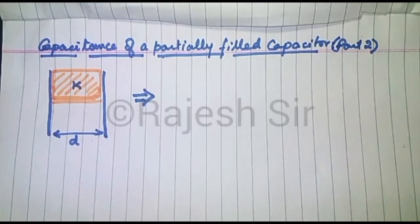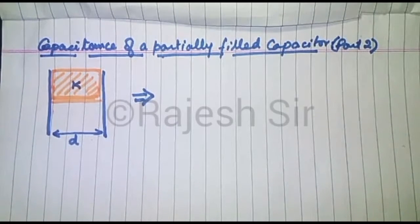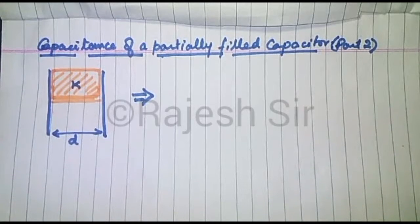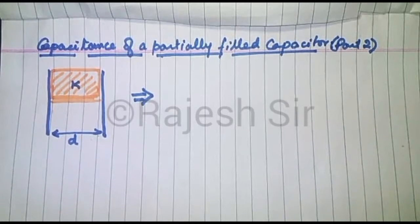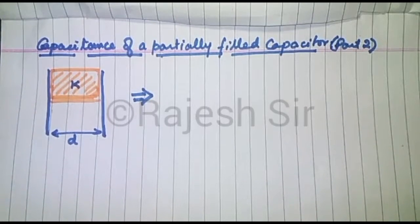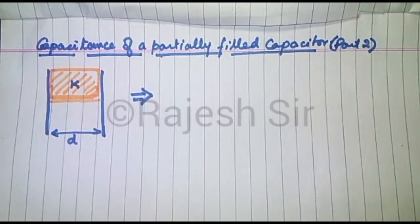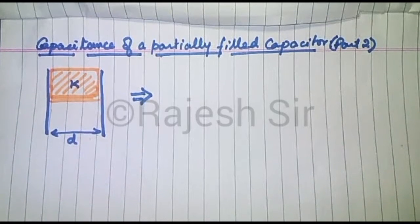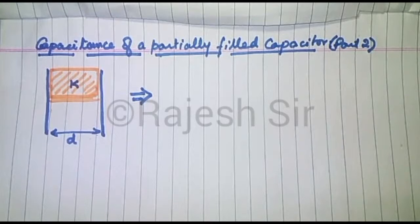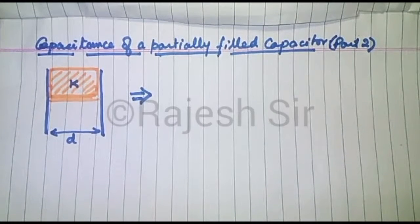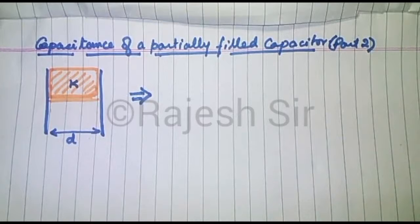Now here we have been given a parallel plate capacitor having plate area A and distance d between the plates. The space between the plates is filled by a dielectric of thickness t equal to d and dielectric constant k.